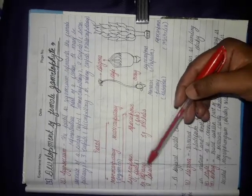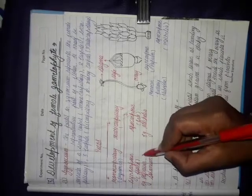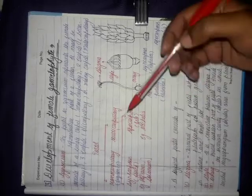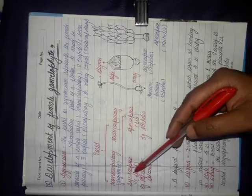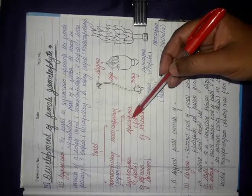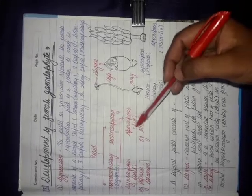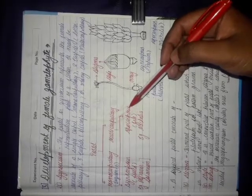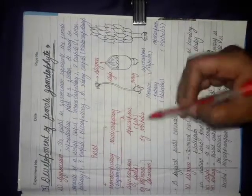Examples of syncarpous condition are from NCERT. Next, the second multicarpellary type is apocarpous, which is simply opposite to syncarpous. If more than one carpels are there and the carpels are free from each other — if no carpel is joined with any other carpel — then this condition is known as the apocarpous condition. The example is Michelia, from NCERT.